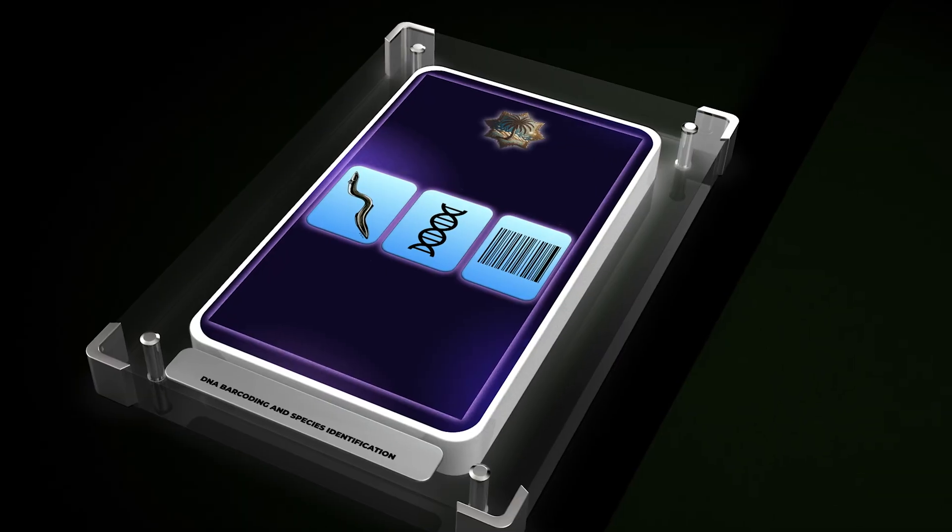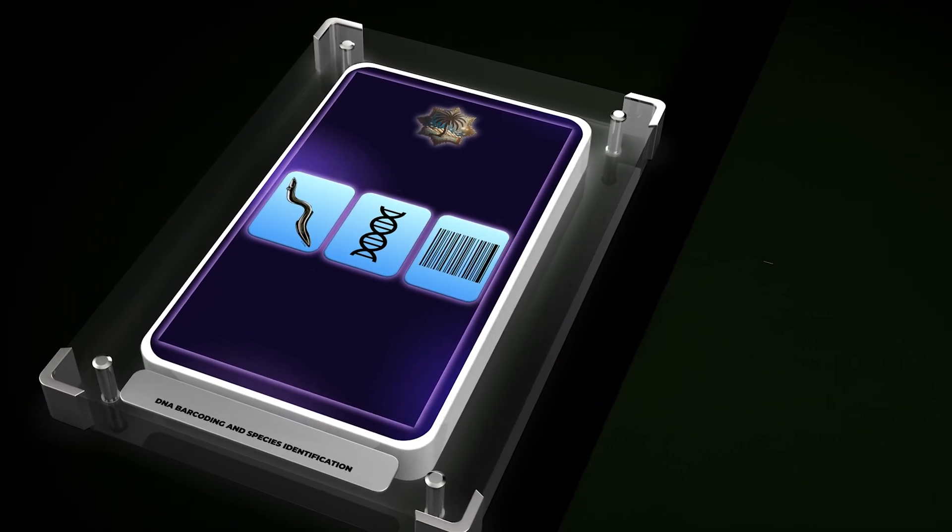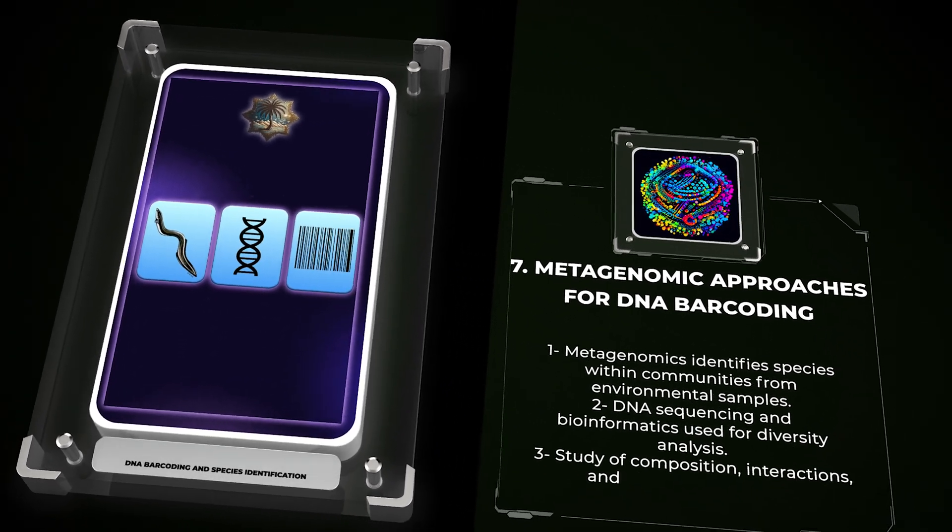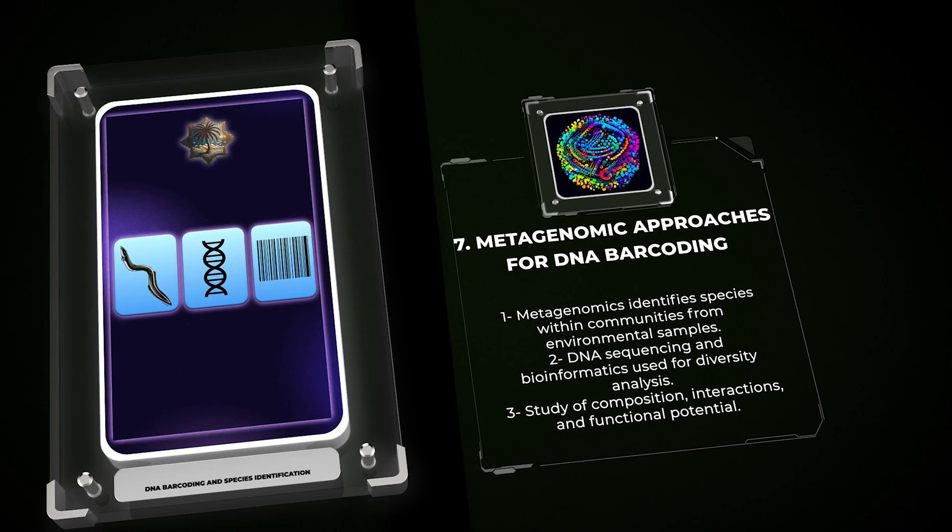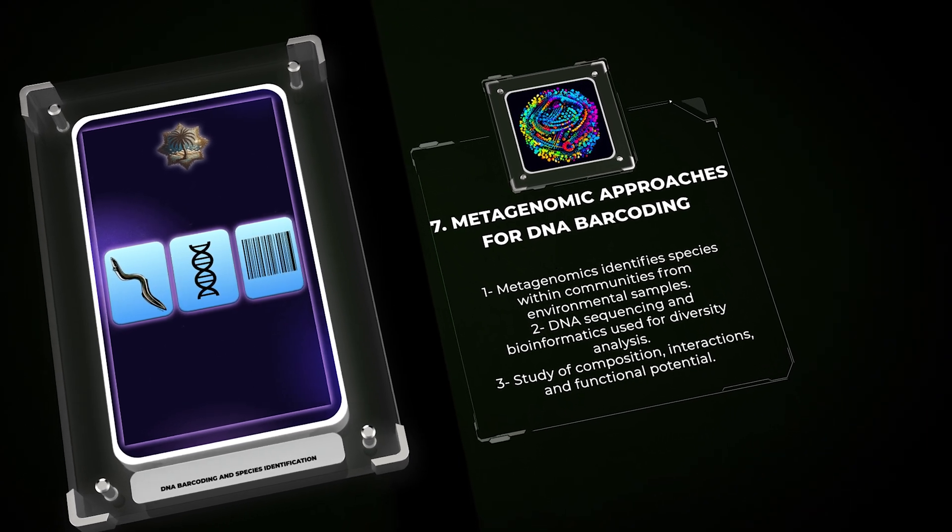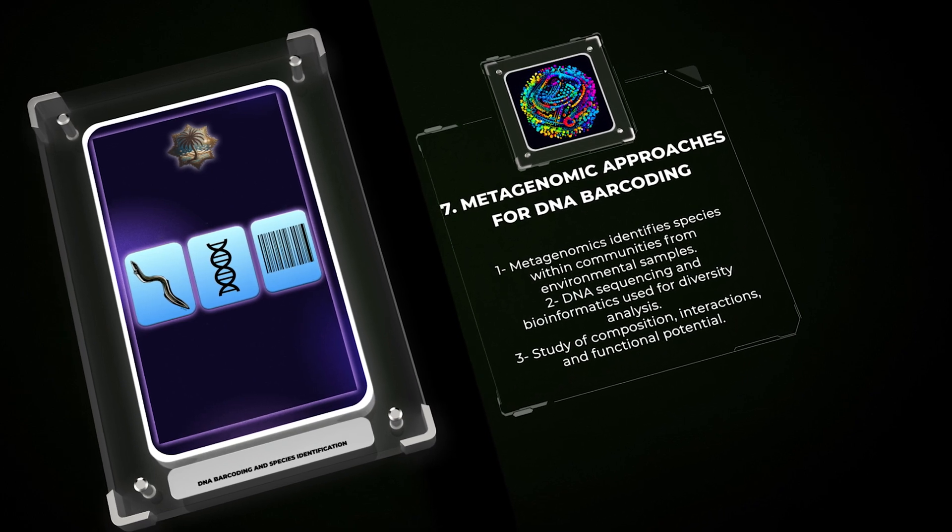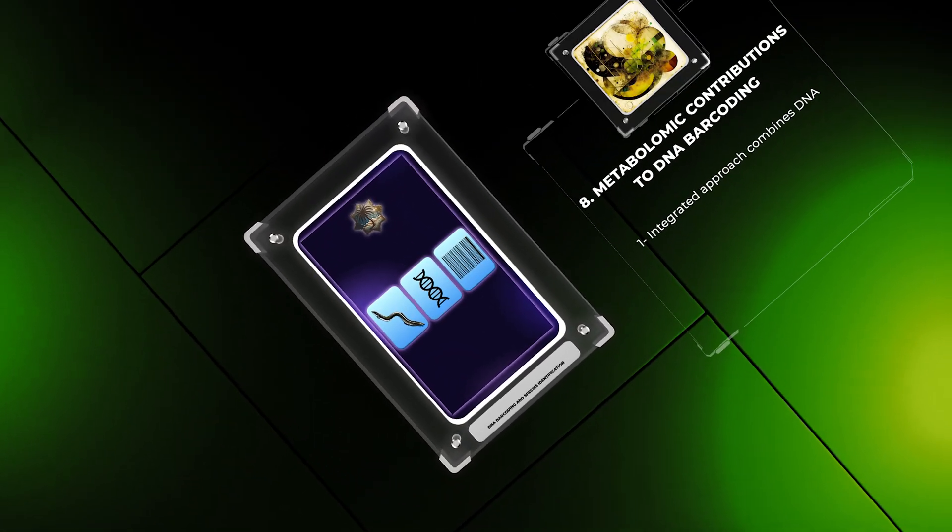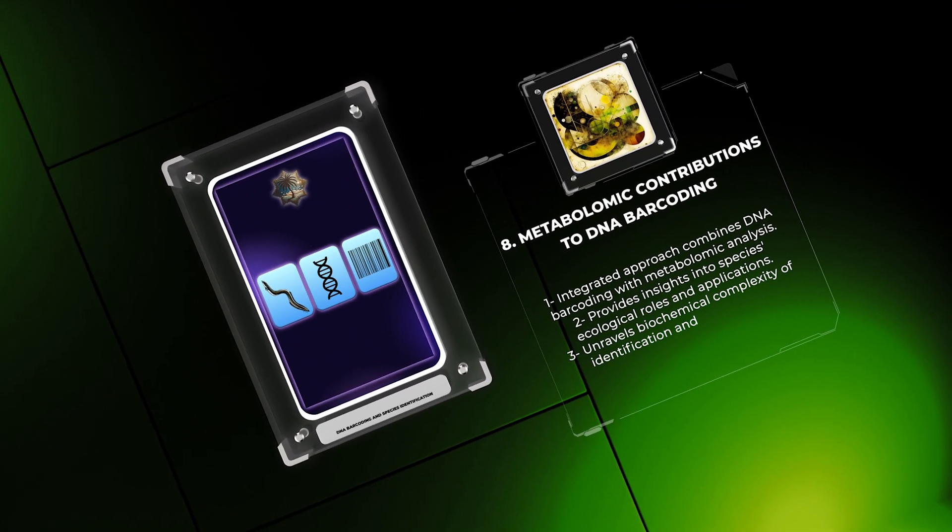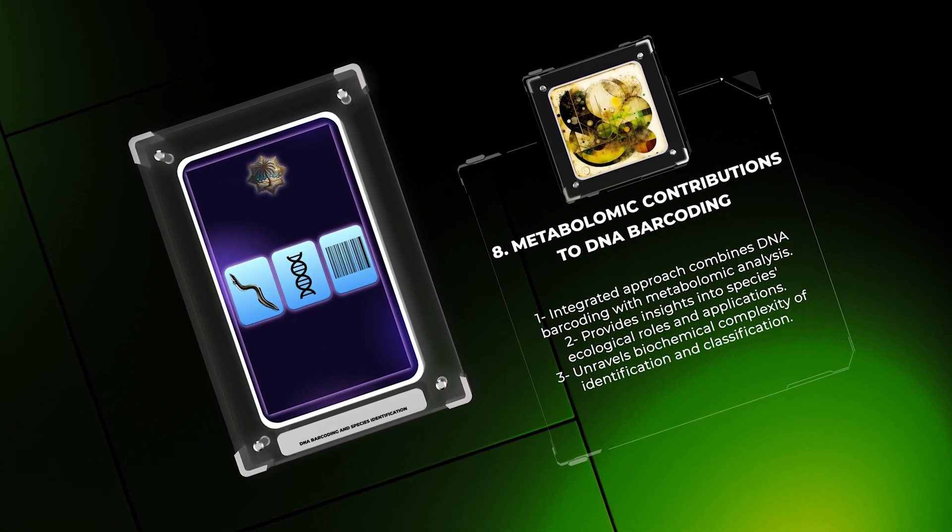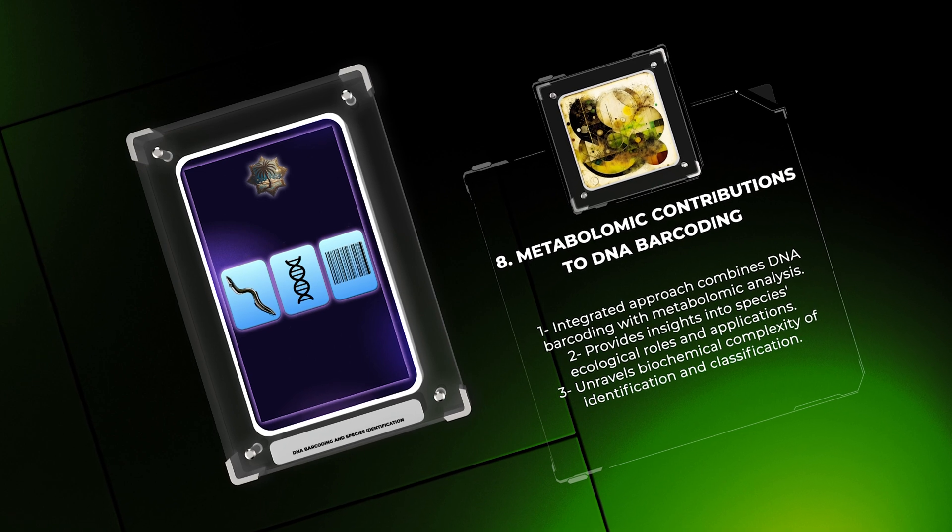By analyzing genetic material from environmental samples, metagenomics enables researchers to identify species within communities without individual sample collection. This approach involves DNA sequencing and bioinformatics tools to study diversity, composition, interactions, and functional potential. This integrated approach can provide insights into species' ecological roles, evolutionary relationships, and potential applications in fields like medicine, agriculture, and conservation.